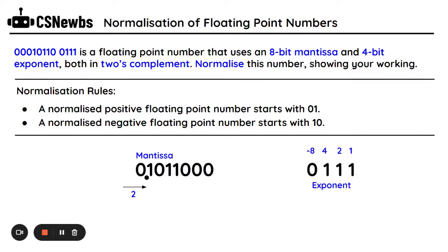My mantissa is now normalized, but because I've had to make some changes to the mantissa, I also need to make some changes to the exponent. The current value of my exponent is 7 — 4 plus 2 plus 1. Because this uses two's complement, the most significant bit in the exponent is going to be a negative value, which in this instance is minus 8, but we don't need to worry about that. I've had to move my mantissa two spaces to the right, so I now need to decrease the exponent by 2.